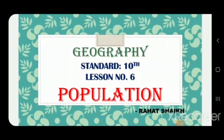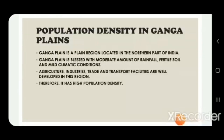Hello students, welcome back to the second video. Let's see population density in the Ganga Plain. The Ganga Plain is a plain region located in the northern part of India. It is blessed with moderate rainfall, fertile soil, and mild climatic conditions. Agriculture, industries, trade, and transport facilities are well developed in this region.